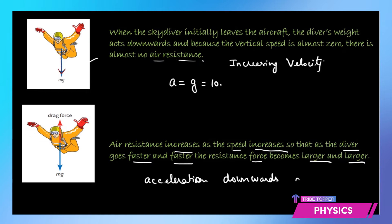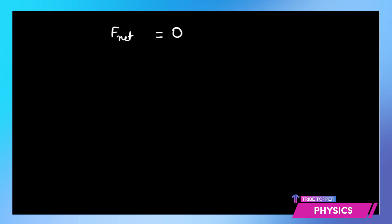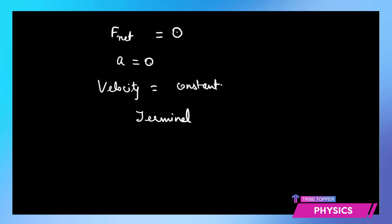Finally, a stage will come when both the drag force upward and the weight downward become equal. At that stage the forces balance out, and when these forces balance out the resultant force on the diver becomes zero. Whenever the resultant force is zero — as we discussed earlier in mechanics — the acceleration will also reduce to zero, meaning the velocity of the skydiver becomes constant. We call this velocity the terminal velocity or terminal speed.